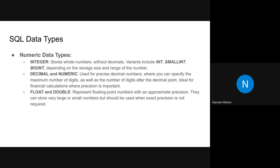Another numeric data type is DECIMAL and NUMERIC, used for precise decimal numbers where you can specify the maximum number of digits — for example, 20 digits — and also the number of digits after the decimal point, such as three decimal places. FLOAT and DOUBLE represent floating-point numbers with approximate precision and should be used when exact precision is not required. If you want exact precision, use DECIMAL.